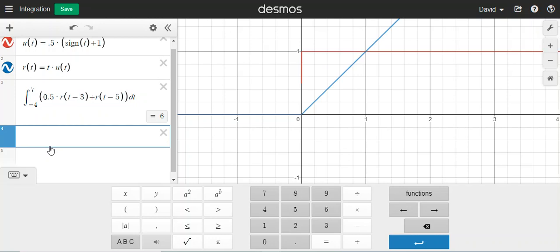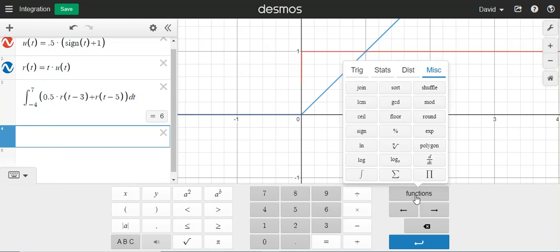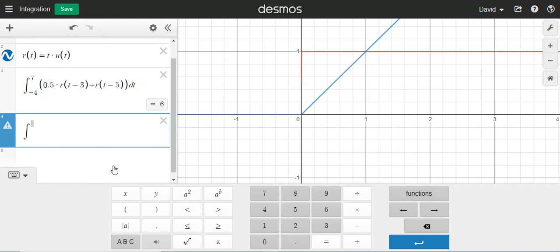Now I've said that you can get a ramp from integrating a step. So now, Desmos can do that as well. So I'm going to insert an integral. For this case, I'm going to just start at minus 1. But I want to go up to t.